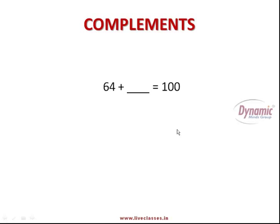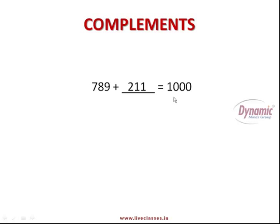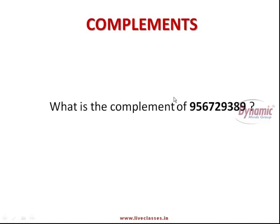As you know, two numbers that add to 100 are complements. So 64 plus what gives 100? You can mentally find it — the answer is 36. Now if I give you a slightly bigger number, say 789, you subtract 789 from 1000 and you get 211. So that was easy. But what if the number is very large?